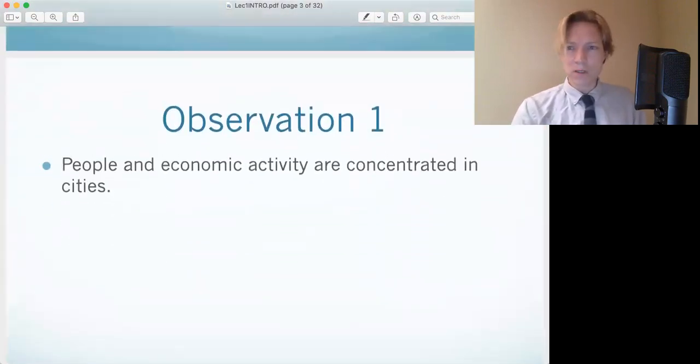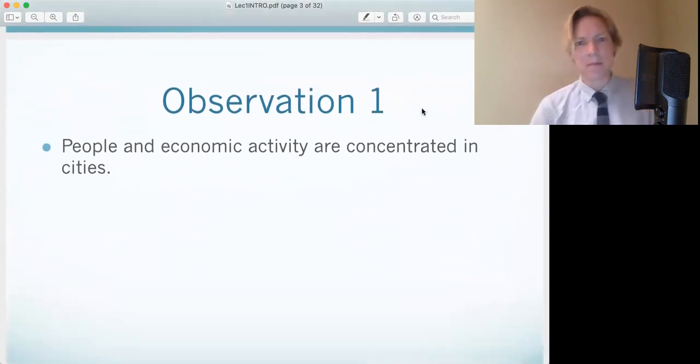So our first observation, which may seem obvious, is that the majority of our economic activity is concentrated in cities. People are there and all the economic activity is there, which may seem obvious, but this was not always the case. If you go back before the Industrial Revolution, everything is concentrated in the rural areas. It's an agrarian-based economy.